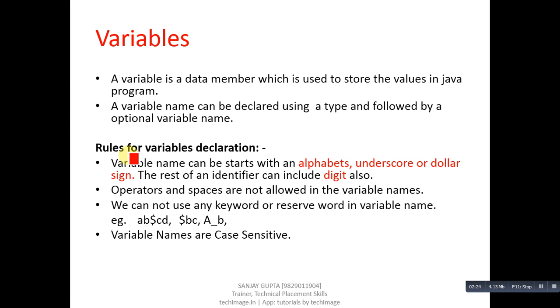The rest of an identifier can include digits also. Here, dollar is additional. In C and C++, we can only use alphabet and underscore to start variable names, but in Java, you can also use dollar.